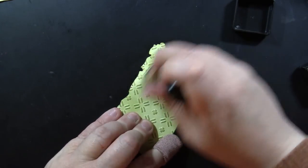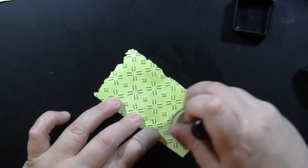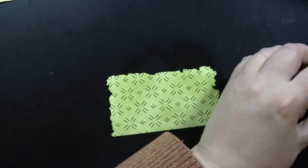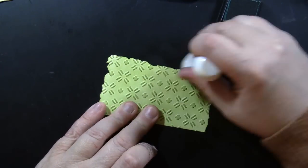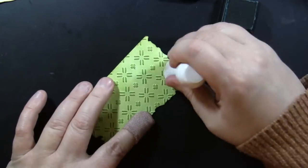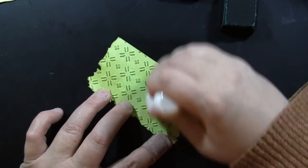Again, I'm just ink blending on top using an ink applicator tool with a foam pad and some Distress Ink. Here I used a couple of colors just for some variation.